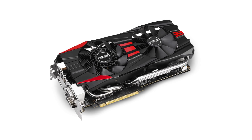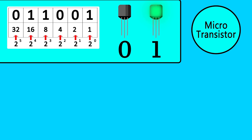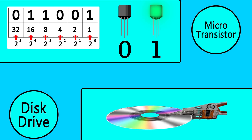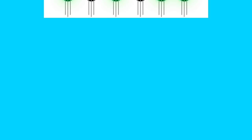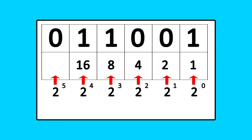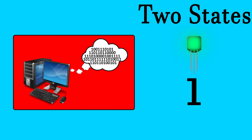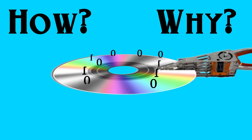In a previous video on binary, I explained how two-state transistors are used to represent binary numbers composing data. In this video, I will explain a different way that binary data is stored — on a spinning disk drive. Computer data is all stored in binary: something that can have two states, which is interpreted as a 1 or a 0. How does a spinning disk achieve this, and what advantages does a spinning disk have over the microtransistor method?